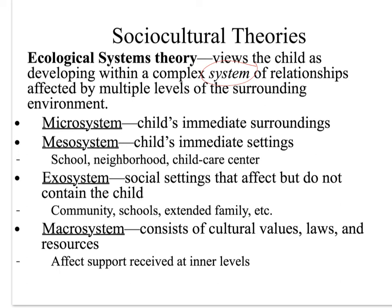He looks at the microsystem as being the individual and most intimate part of our surroundings — for example, the child's immediate surroundings, mom, dad, and siblings. The mesosystem would be the immediate settings in relation to the child: the school they go to, the neighborhood where they grow up, the childcare center — all things that contribute to the child's ability to succeed. The exosystem, though it seems detached from the child, is the part of the social setting that does not necessarily contain the child but does affect it.